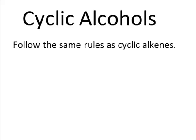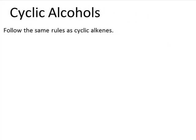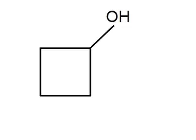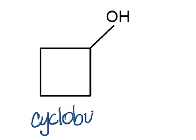Finally, let's do a couple of examples of naming cyclic alcohols. These will be very similar to the rules we looked at with cyclic alkenes. Alcohols get priority in both numbering and position, meaning the alcohol's position is always implied as position number one — we don't need to designate it unless we have more than one substituent that requires clarification. The first example: a four-carbon ring with an OH group. Without the OH, it would be cyclobutane — with it, we call this cyclobutanol. Don't forget the cyclo prefix. No number is needed because there are no other substituents.